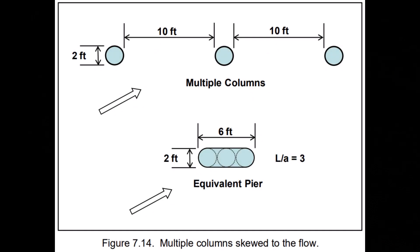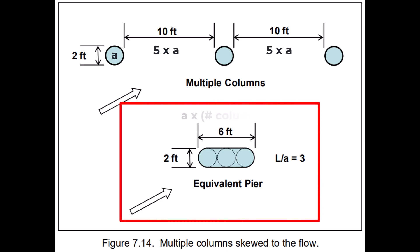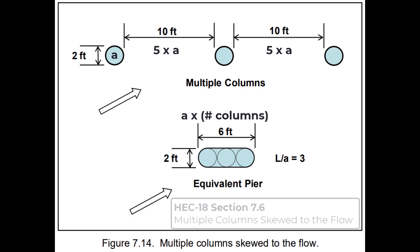When columns are spaced less than five times the column width apart and debris accumulation between columns is not significant, the individual columns should be treated as a single wall pier with a length equivalent to the total column width. This is described in further detail in Section 7.6 of HEC-18.